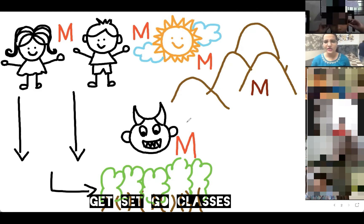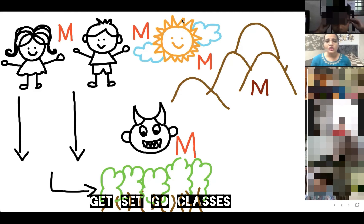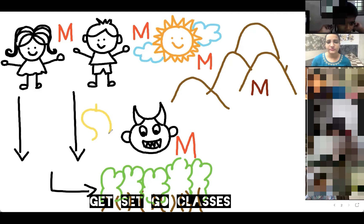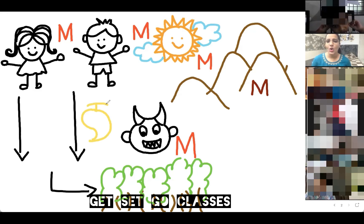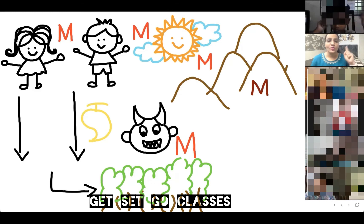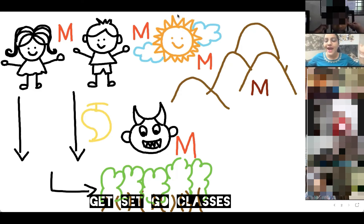Monster says: Okay, I will tell you the way. But would you like something to eat? You must be hungry. Mona and Manav say: Yes, we are very hungry! So monster gave them this fruit. Which fruit is this? Mangoes! Yes, mangoes!